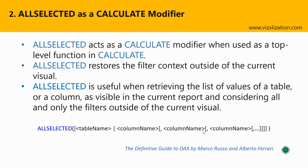ALLSELECTED as a calculated modifier — three critical points. First, ALLSELECTED acts as a calculated modifier when used as a top-level function in CALCULATE. Second, ALLSELECTED restores the filter context outside of the current visual. And finally, ALLSELECTED is useful when retrieving the list of values of a table or column as visible in the current report, considering all and only the filters outside of the current visual. The syntax is very similar to the ALL function.